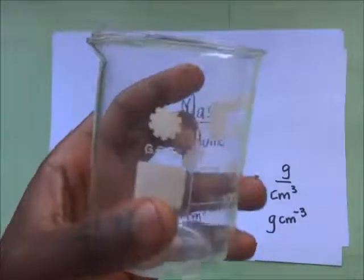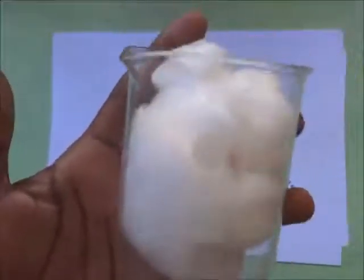This is our beaker, right? Let's put in some cotton. Now, the density of this cotton, the measure of compactness of this cotton is low. It means the density is low.